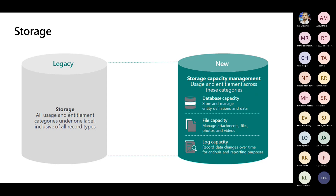On the screen you can see the legacy model, which was the old one that used to have only one box for everything. Now in the latest environments, we see that categorization has been done. One is for database, the second one is for file, and the third one is for logs. We'll go into detail to understand what database, file, and log mean.